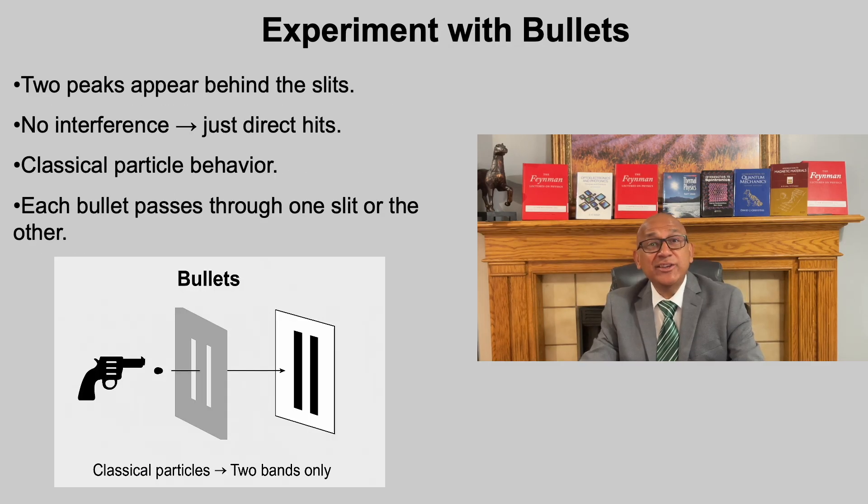Let us first imagine firing actual bullets at a barrier with two openings. Each bullet is a classical particle. It either goes through the left slit or the right slit. On the screen behind, we simply see two clusters of hits, one behind each slit. There is no interference, no overlapping patterns. Just two distinct peaks, exactly what we expect from classical particles.